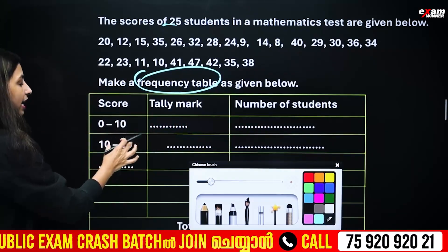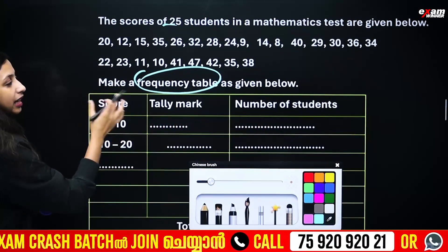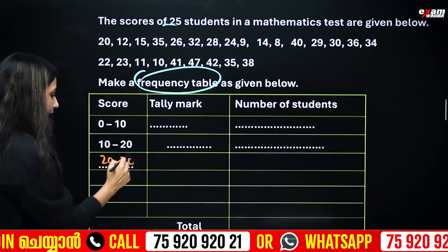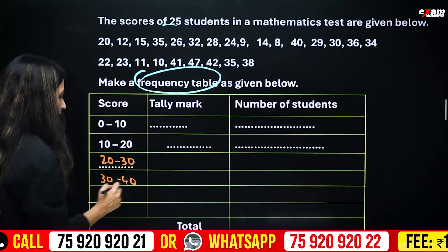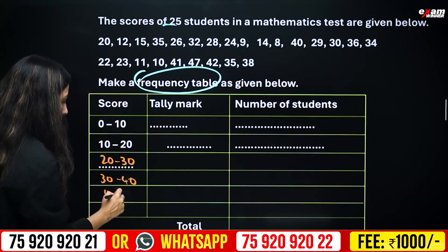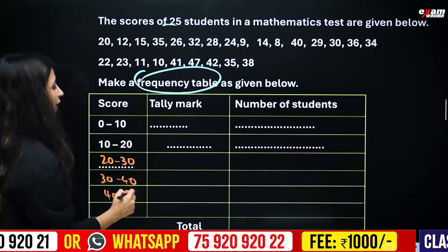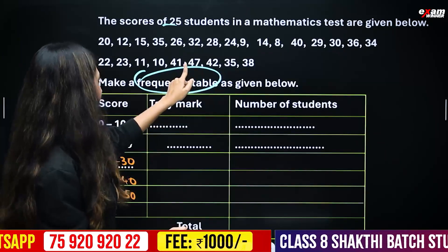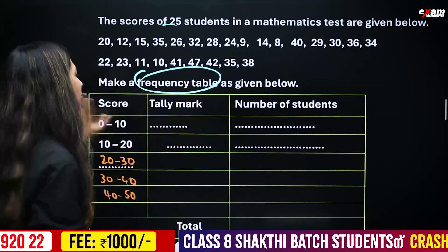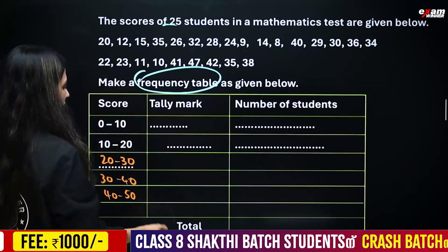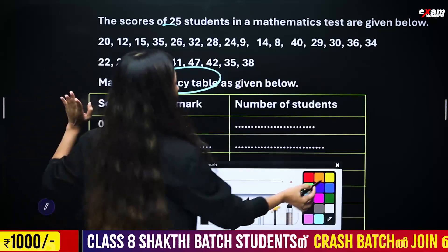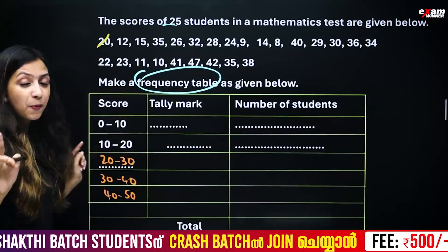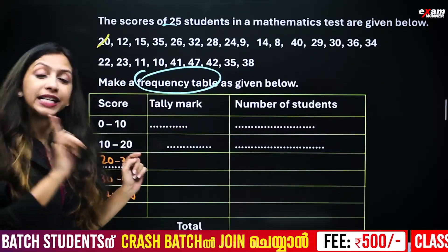The class intervals are: 0 to 10, 10 to 20, 20 to 30, 30 to 40, and 40 to 50. Now 50 is the highest score and 47 is the highest score noted. We will mark the tally. Where does 20 go? It falls from 10 to 20, then we go to 20 to 30.